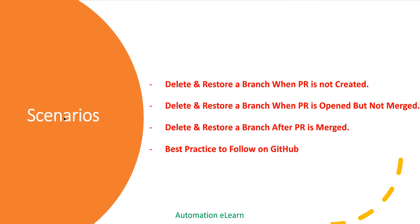These are the scenarios we are going to discuss: first, how to delete and restore a branch when a pull request is not created. Second, delete and restore a branch when a pull request is opened but not yet merged. Third, how to delete and restore a branch after a pull request is merged. We will also understand the best practice to follow for deleting and restoring branches on GitHub.